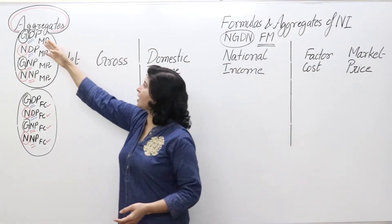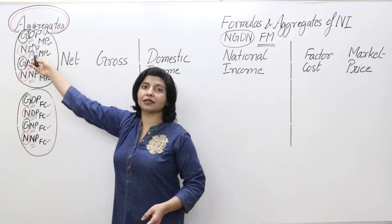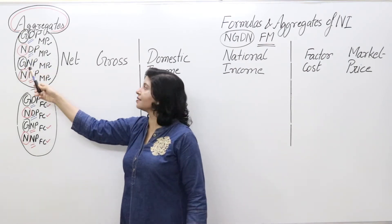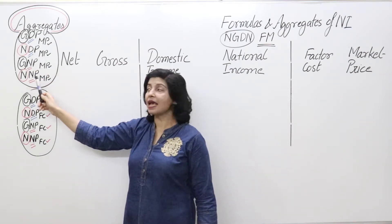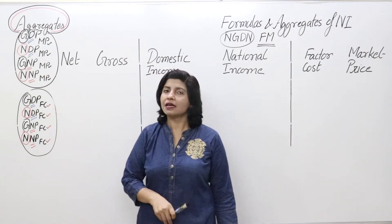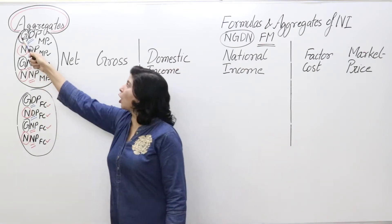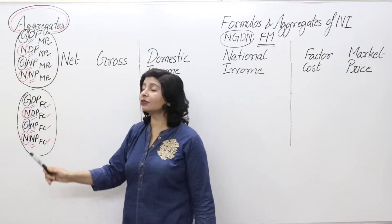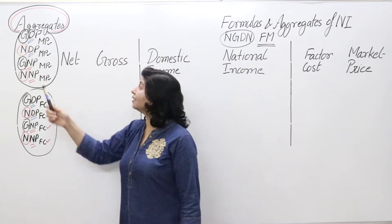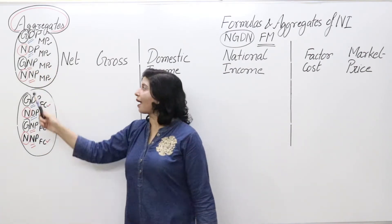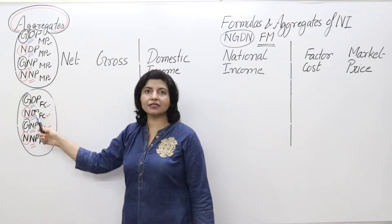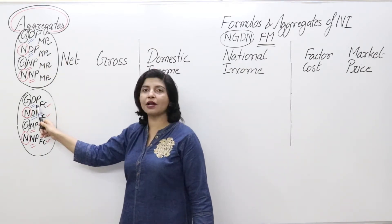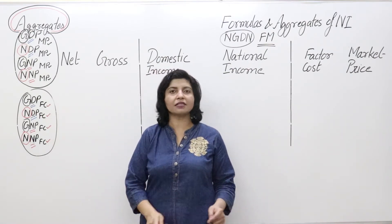Here we have all the aggregates that appear in different formulas: GDP at MP (Gross Domestic Product at Market Price), NDP at MP (Net Domestic Product at Market Price), GNP at MP (Gross National Product at Market Price), and NNP at MP (Net National Product at Market Price). Notice the pattern — Gross and Net alternate in first position, then Domestic and National, and finally Product at Market Price or Factor Cost.